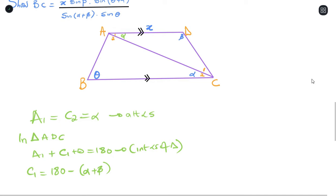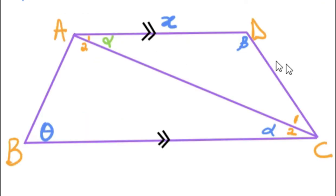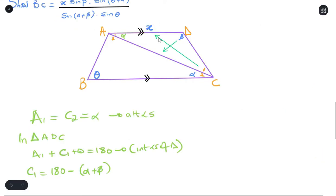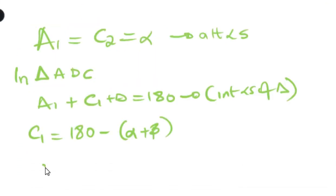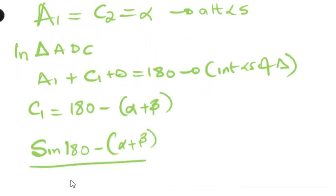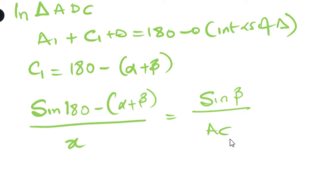Now with that, we can do sine rule. We can do sine rule because we have a full pair, which is C1 and x, and we have an unknown pair, which is beta. And since we're trying to get AC, that's the two we will be focusing on. Working with sine rule, we have sine 180 minus alpha plus beta over x equals sine alpha over AC.